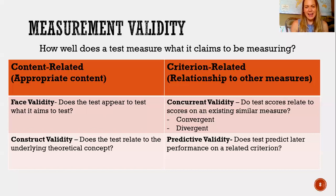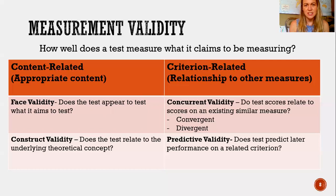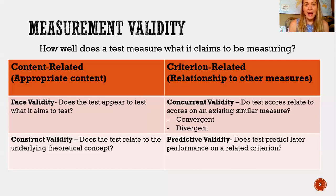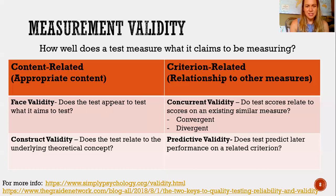Predictive validity asks: does the test predict later performance on some related criterion? This is actually one of the criticisms of standardized IQ testing, especially ones with a more narrow definition of intelligence like the WASI. You would assume that someone who performs well on an IQ test should also do well at university, for example. But this is not actually the case, and this is one of the criticisms of standardized IQ tests — they don't have high predictive validity. Check out the links if you'd like more information.